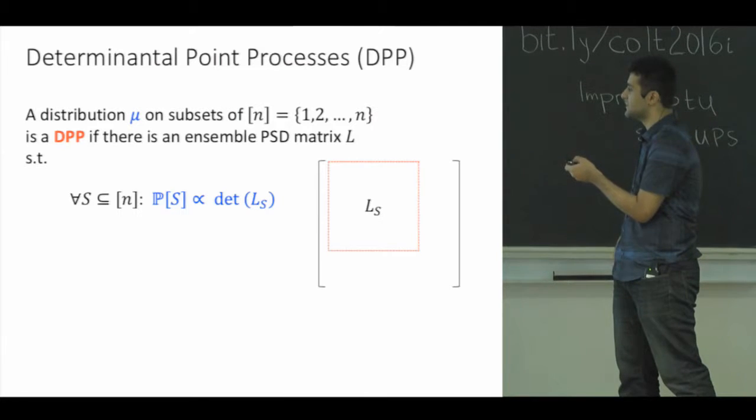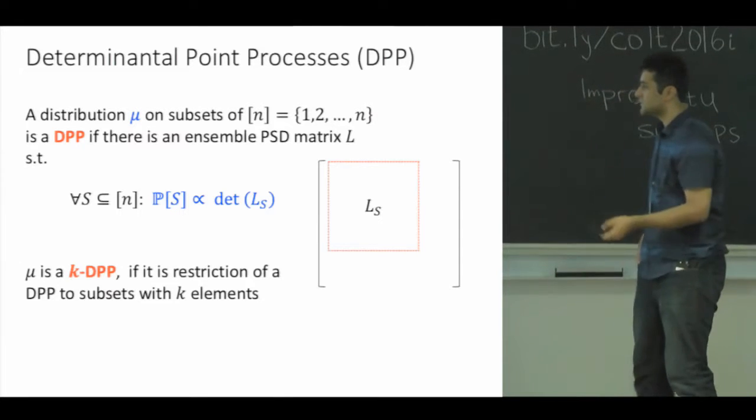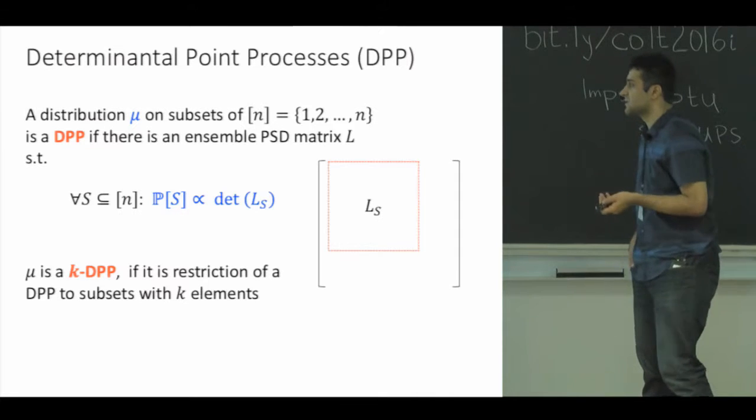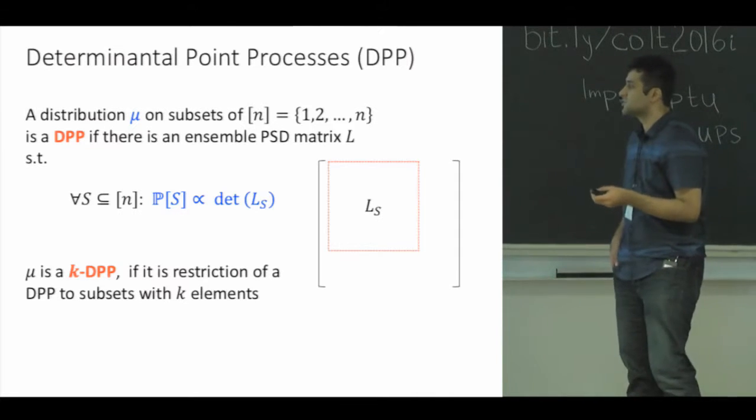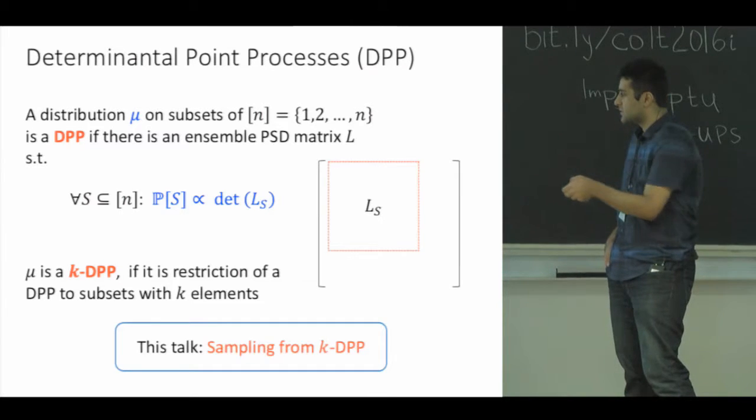This matrix is called the kernel or the ensemble matrix of the DPP, the determinantal point process. We also say μ is a k-DPP if it's a restriction of a DPP to subsets with k elements. In other words, if you condition a standard DPP on the event that the chosen subset has k elements, you will get the k-DPP. The problem I'm interested in this talk is sampling from these k-DPP distributions.